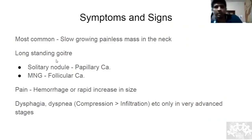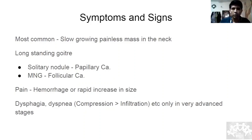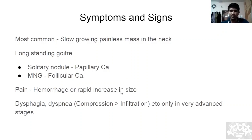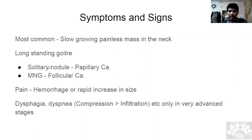Coming to symptoms and signs: patients most commonly present with a slow, painless mass in the neck — invariably painless. Pain occurs only when there is hemorrhage or sudden rapid increase in size due to necrosis. Long-standing goiters that can cause carcinoma: a solitary nodule commonly leads to papillary carcinoma; a multinodular goiter commonly leads to follicular carcinoma in the future.